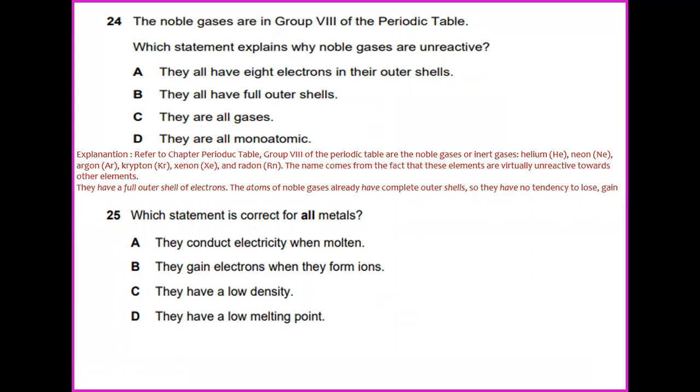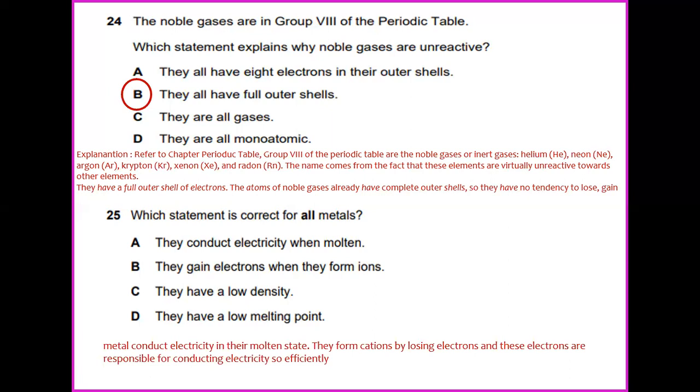And the reason is B, they all have full outer shells of electrons. The atoms of noble gases already have complete outer shells, so they have no tendency to lose or gain. So the answer for this would be B. Which statement is correct for all metals? Metals conduct electricity in their molten state and they form cations by losing electrons. These electrons are responsible for conducting electricity so efficiently. So the answer for 25 is A.